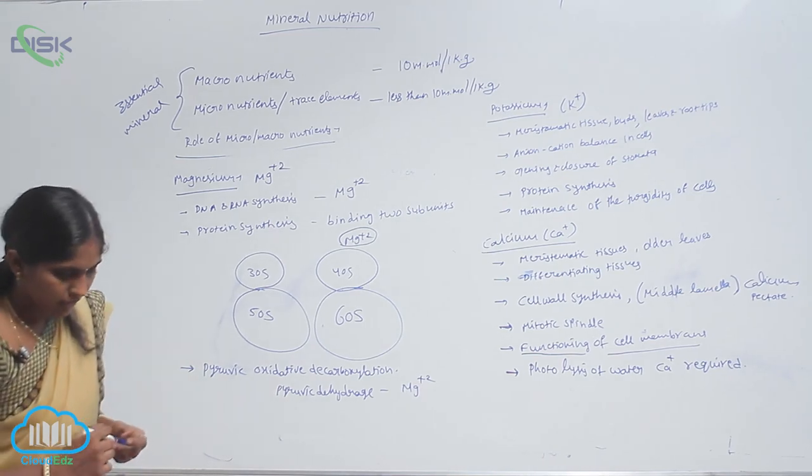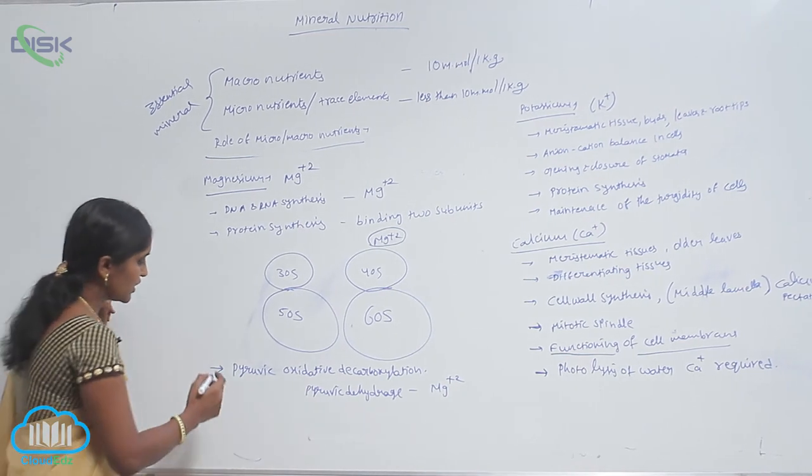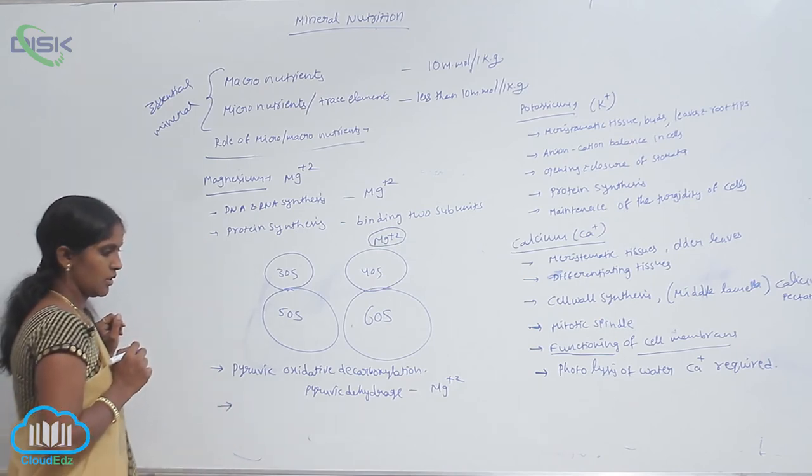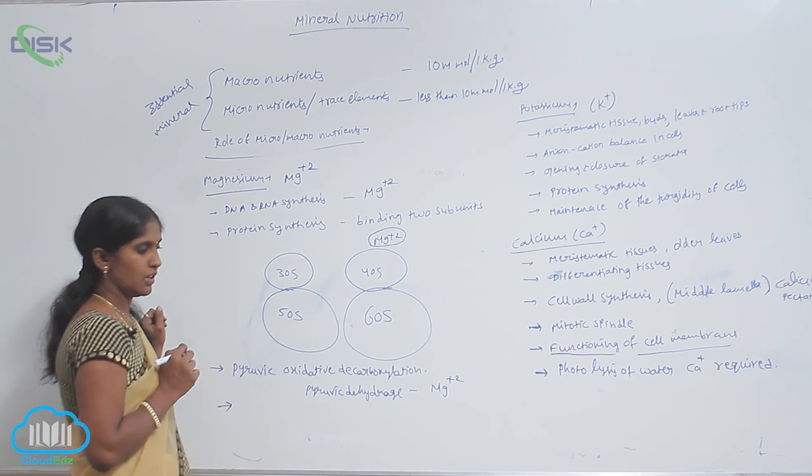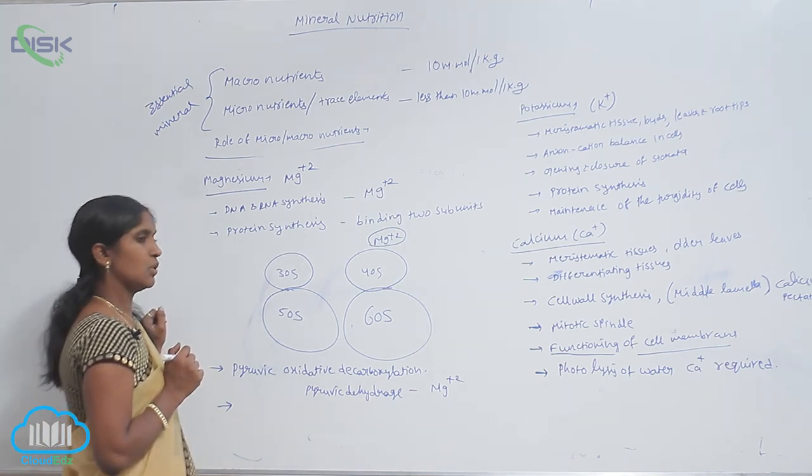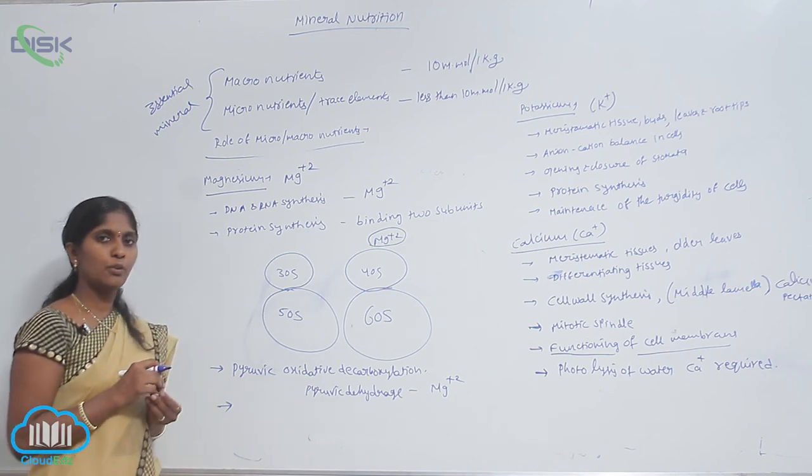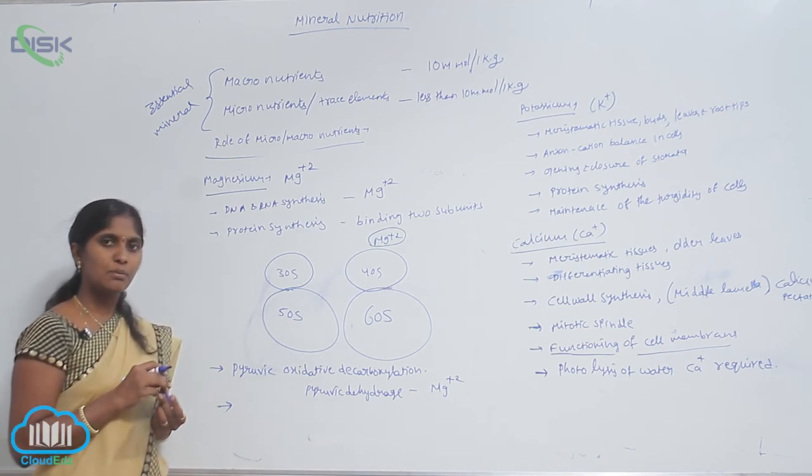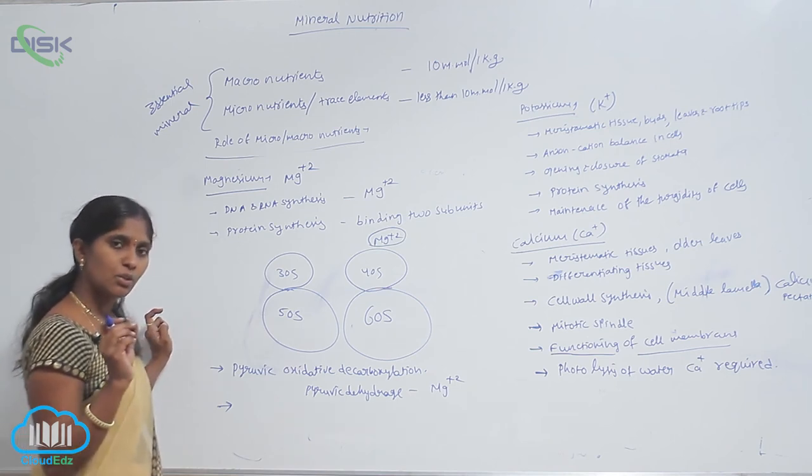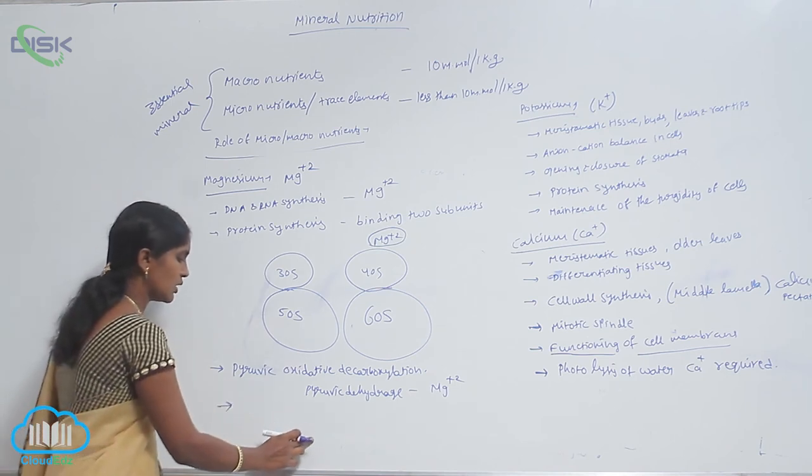And for production of chlorophyll, the structure of chlorophyll can be maintained by Mg+2. The coloration of chlorophyll is also provided by Mg+2. Structurally it is a part of chlorophyll. Where is it located?